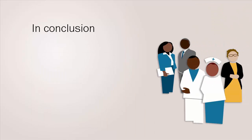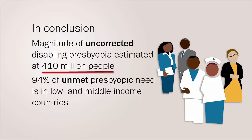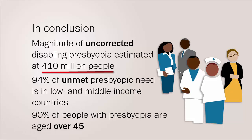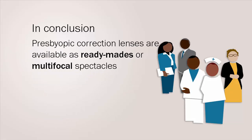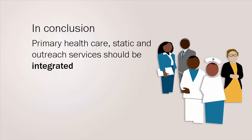In conclusion, the magnitude of uncorrected disabling presbyopia has been estimated at 410 million people, with an increase to 563 million by 2020. 94% of the unmet presbyopic need is in low- and middle-income countries. 90% of people with presbyopia are aged over 45. Presbyopic correction lenses are available as ready-mades or as multifocal spectacles, and their use should be planned with local needs in mind. Services to improve access, availability and affordability of presbyopic correction should be planned at the local level. And finally, primary healthcare, static and outreach services should be integrated.